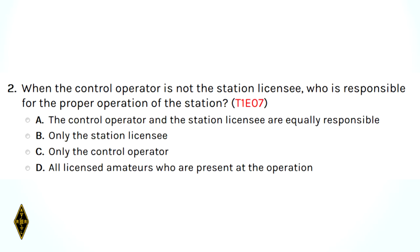Question two: when the control operator is not the station licensee, who is responsible for the proper operation of the station? A, the control operator and the station licensee are equally responsible. B, only the station licensee. C, only the control operator. Or D, all licensed amateurs who are present at the operation.